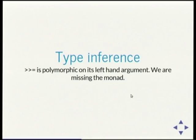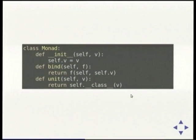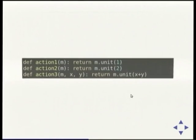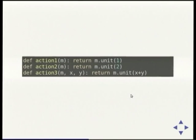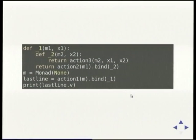The dispatch in Haskell is polymorphic on type and the bind function is polymorphic on the left-hand argument. You could create a monad class and a binding unit — there are a thousand of these on PyPI and I'm not going to add to that mess. You end up passing the monad into all of your functions because you don't have Haskell's capability of having it as context.